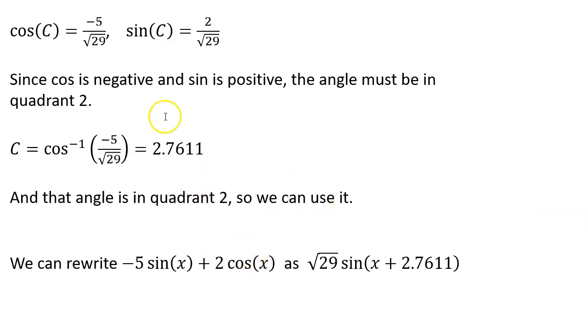So using this value of c we got here and the a from earlier, we can rewrite negative 5 sine x plus 2 cosine x as a single sine function, a shifted sine function, square root of 29 sine x plus 2.7611.